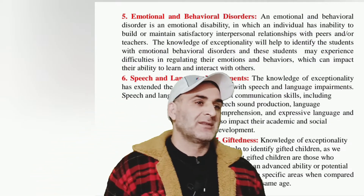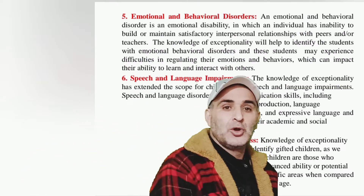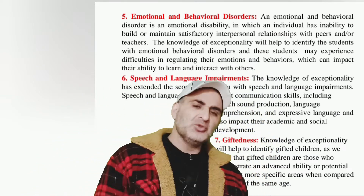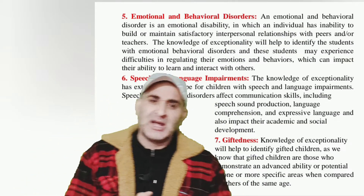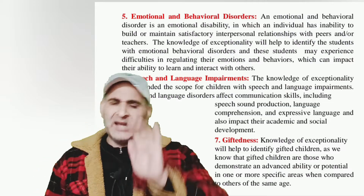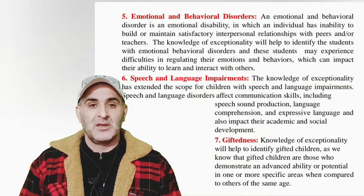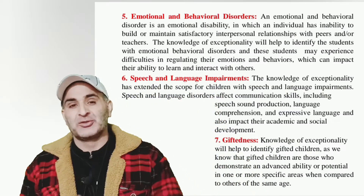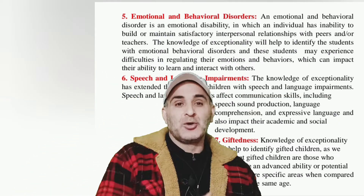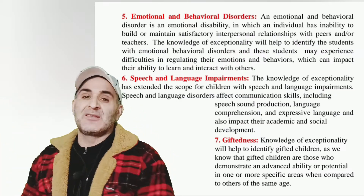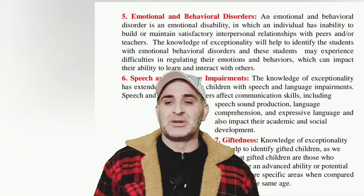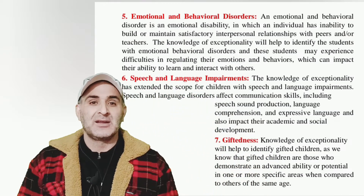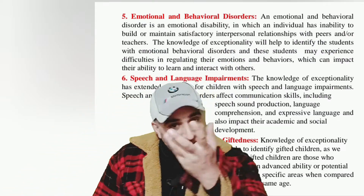Number seven: Giftedness. Gifted children are those who usually possess a high IQ — almost 140 and above. Due to their high intelligence range, they are ahead of normal children in every field. That is why these children are also called talented children. Their scientific temper is high, their comprehension power is high, and all cognitive competencies and mental faculties are very much developed among gifted children. Knowledge of exceptionality helps us to identify and make appropriate provisions for gifted children.